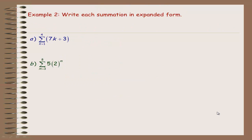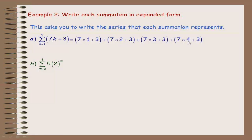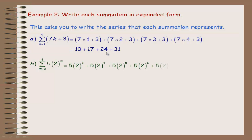The example on the next page says to write each summation in expanded form — that means to write the series that each summation represents. The first one has the sum 7k + 3, starting at k = 1 and going up to 4. Putting 1 in place of k: 7(1) + 3; then 7(2) + 3; up to 7(4) + 3. Evaluating: 10, 17, 24, 31.